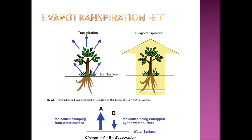Plants can control transpiration by closing stomata, whereas evaporation occurs from the soil surface in the first few days after precipitation or irrigation. When the plant canopy has 100% cover, there is little to no evaporation from the soil surface for two reasons: the sun does not reach the soil surface, and the plant canopy maintains high humidity.